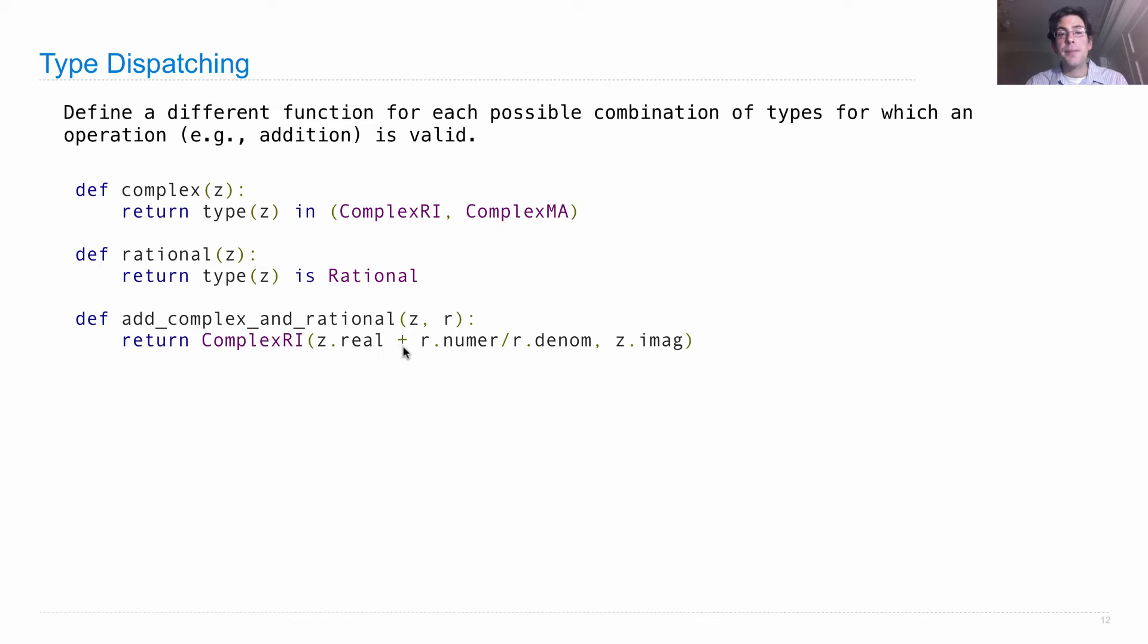plus a rational number expressed as a floating point value. In order to combine with this real component, we're going to have to actually divide the numerator by the denominator, which might give us an inexact representation.